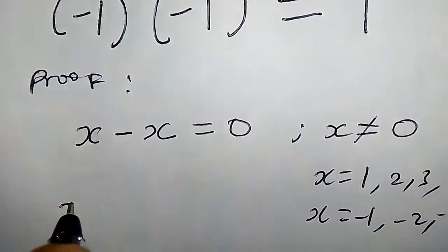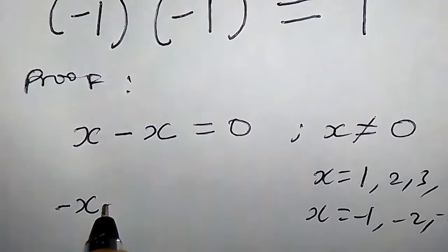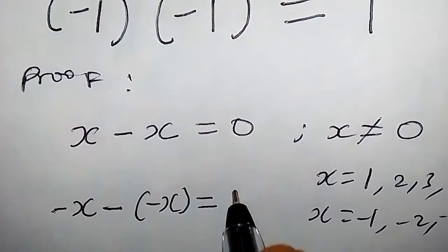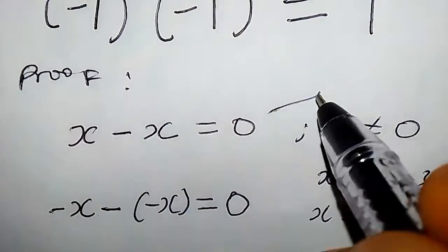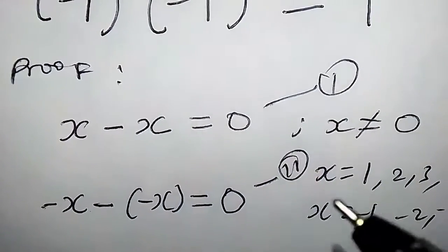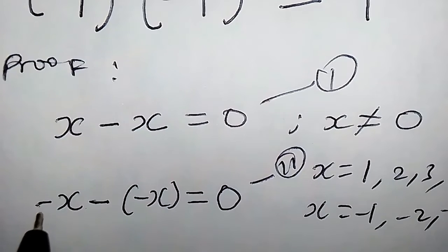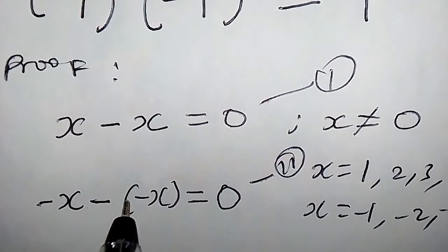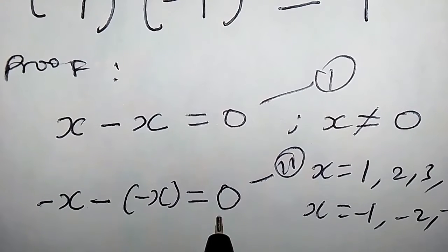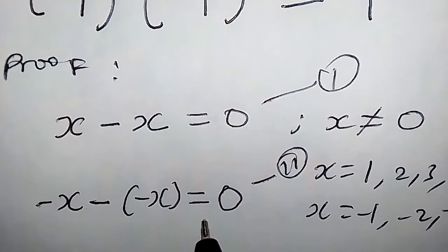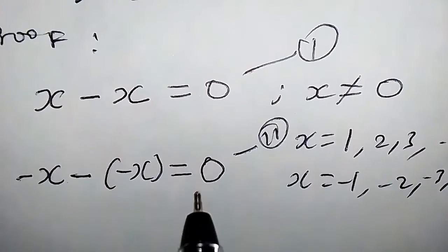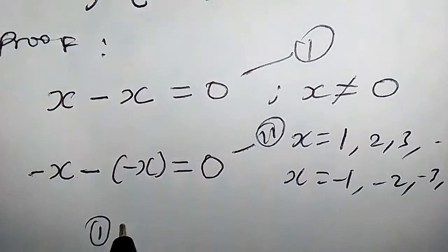Consider this: suppose we replace each x with negative x, so we're going to have minus x minus into minus x, which equals 0. Let's call the original x minus x = 0 equation 1, and this new one equation 2. When we have minus x minus into minus x, that gives 0 because that will be minus x plus x, which equals 0. So this condition is satisfied.